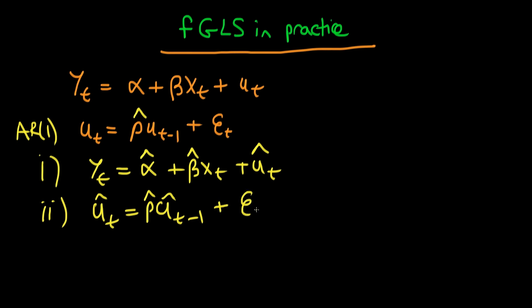And also from this regression we sort of get our sort of estimate of the population errors Et which we call Et hat. And the idea here is that we then use this particular estimated parameter rho hat in order to perform the same sort of transformation which we talked about in the last video.